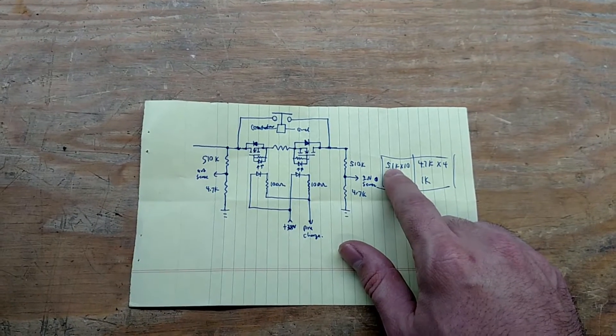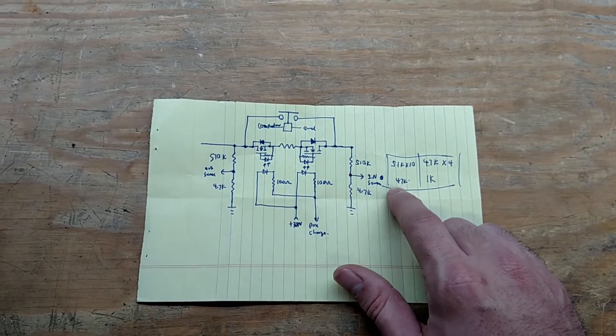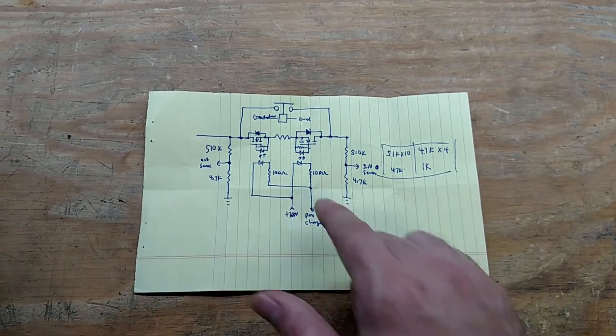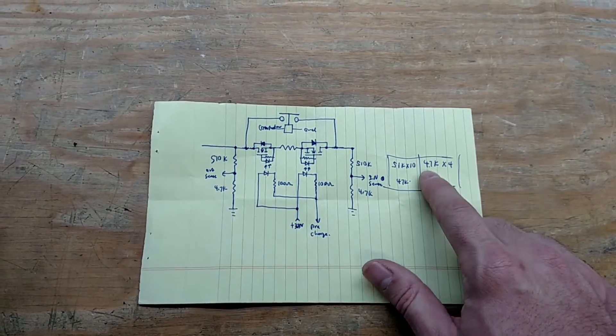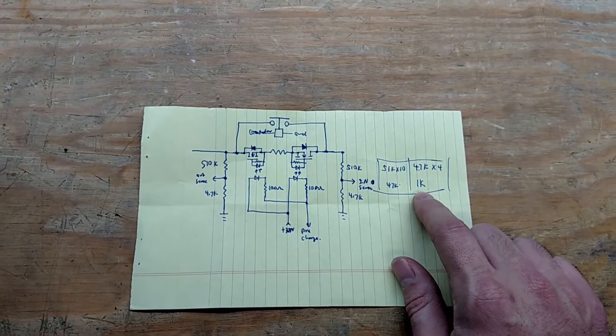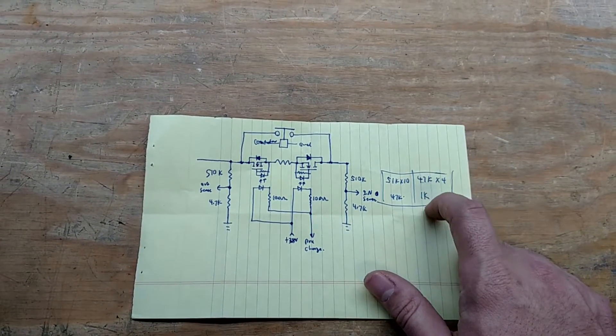Then we've got a little 4.7k down there. For the low voltage side it's the same exact circuit but we have four 4.7ks in series with a 1k to convert 100 volts down to 5 volts.